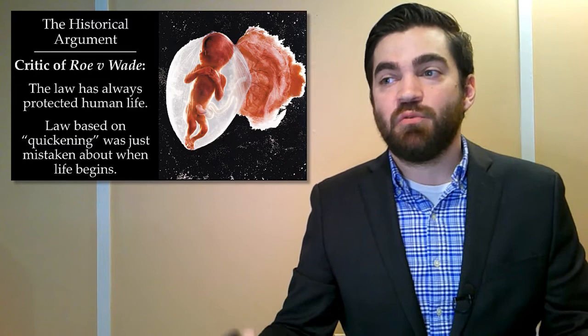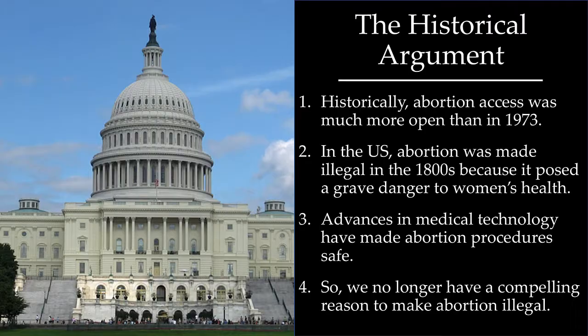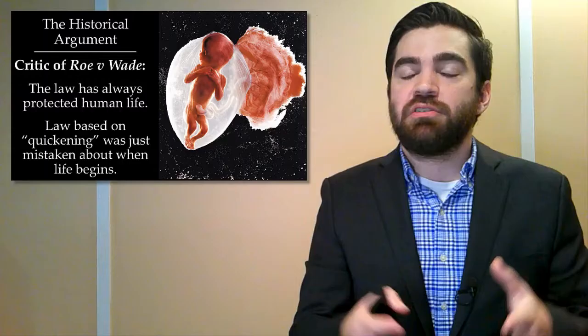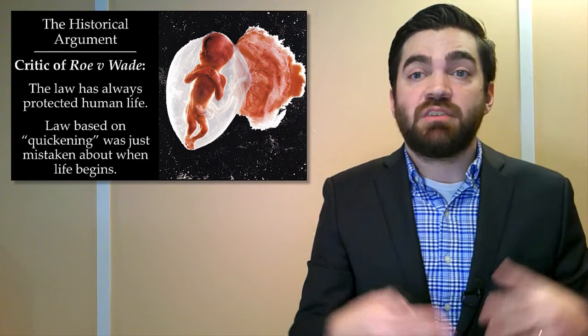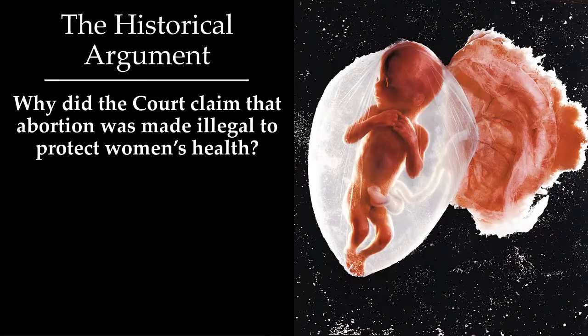So critics are saying: abortion was made illegal in the first place because our understanding of biology changed. Once we understood that the quickening model was mistaken and we had a better understanding of biology, that's when the laws changed — to protect the unborn entity because we realized we were mistaken in thinking there was no living being during the early stages of pregnancy. This directly challenges the Supreme Court's claim that laws against abortion were put in place simply to protect women's health.